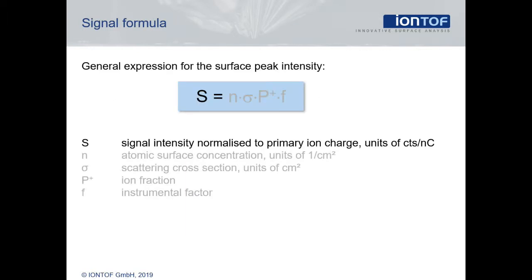The intensity of the peak in the spectrum is determined by the probability of an ion hitting an atom of the specific element, being scattered into the right scattering angle, keeping its charge, being transmitted in the analyzer, and finally detected.